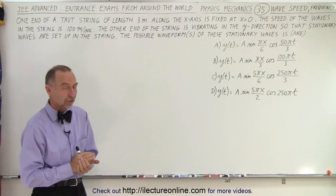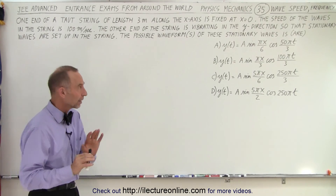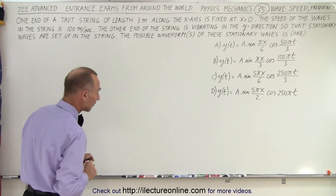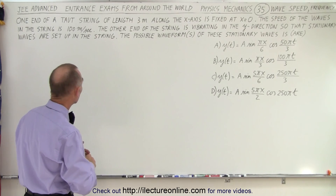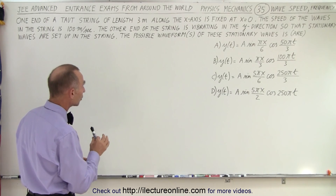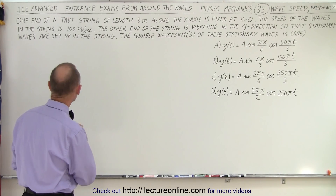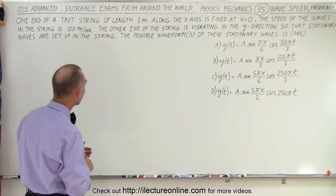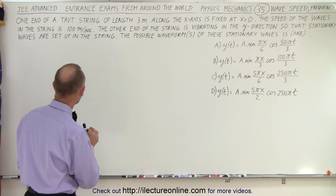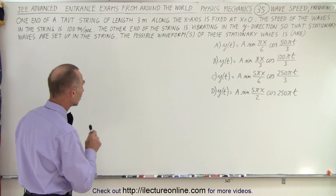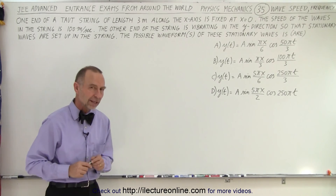Notice they give us four possible answers, and any one — as many as all four — could be correct. The problem states that one end of a taut spring of length 3 meters along the x-axis is fixed at x equals 0. The speed of the waves in the string is 100 meters per second. The other end of the string is vibrating in the y direction so that stationary waves are set up in the string. The possible waveforms of these stationary waves are the four given possibilities.